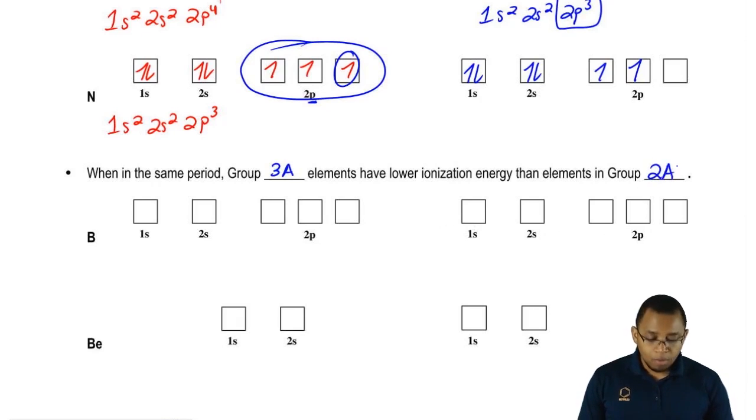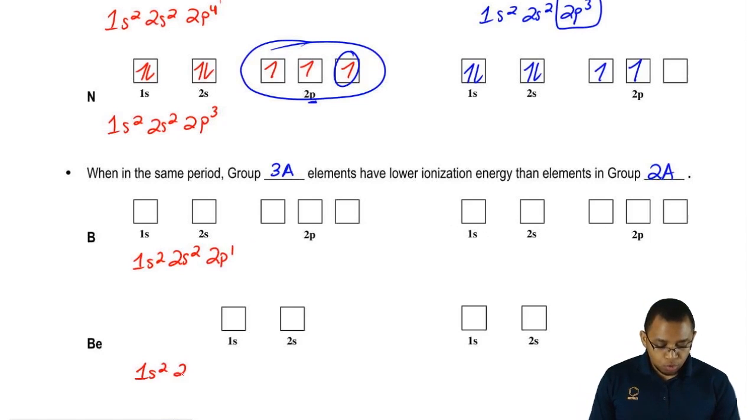Here we have boron. Boron's electron configuration would be 1s2, 2s2, 2p1, and beryllium would be 1s2, 2s2.